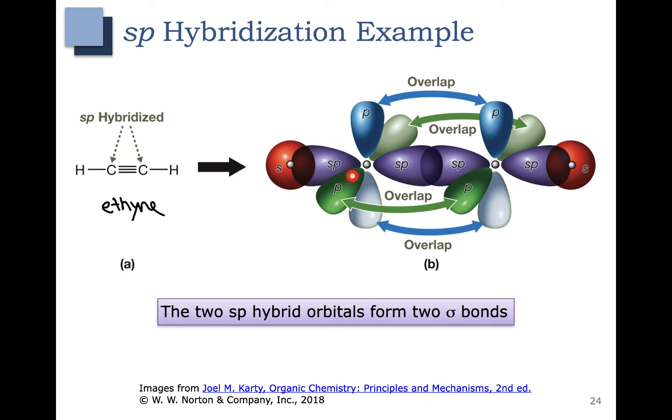So these two sp hybrid orbitals here each form a sigma bond, two sigma bonds total.